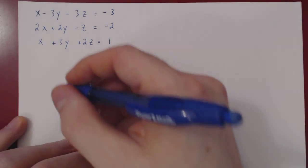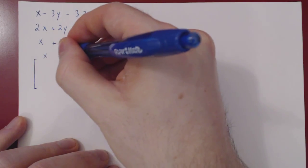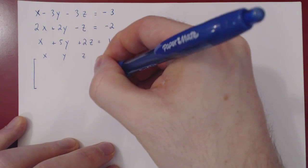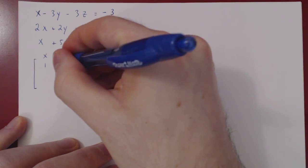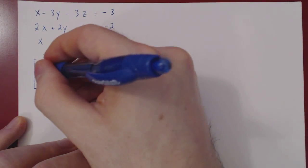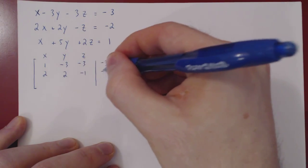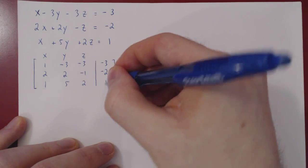As always, we construct the augmented matrix of the linear system. First row, 1, negative 3, negative 3, negative 3. Second row, 2, 2, negative 1, negative 2. Third row, 1, 5, 2, 1.